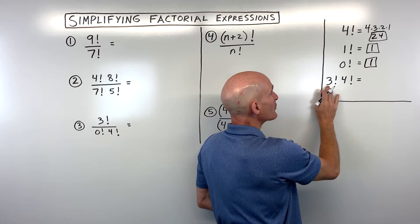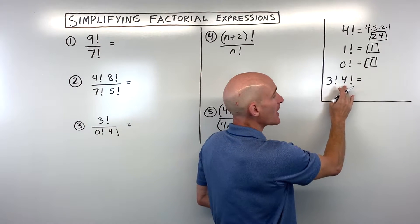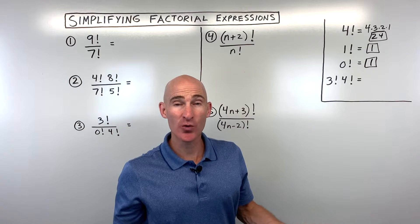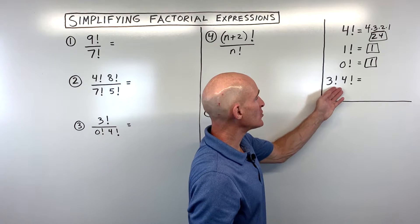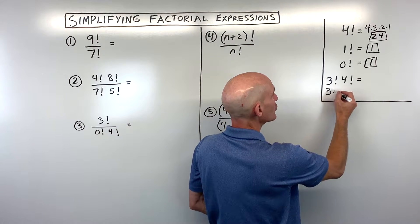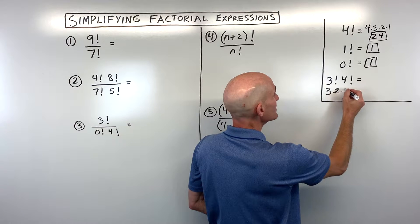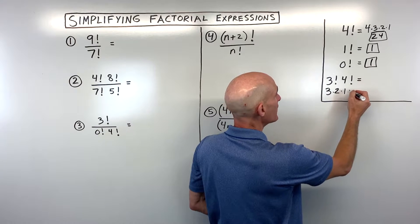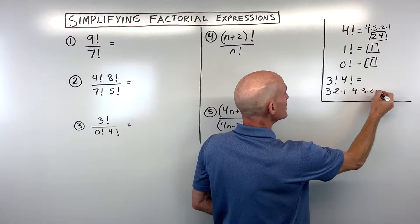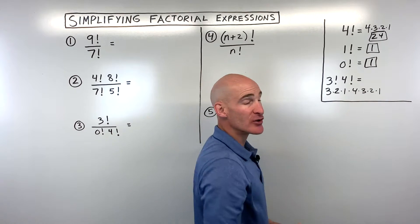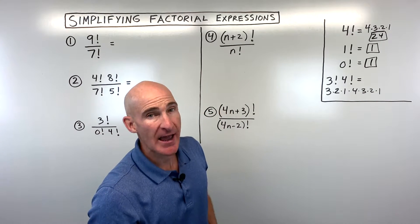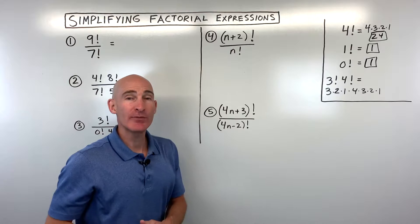If we have three factorial times four factorial, you don't want to make the mistake of saying that's 12 factorial. What you want to do is expand these out individually. So three factorial is three times two times one, and four factorial is four times three times two times one, and then you can multiply those all together.